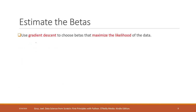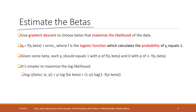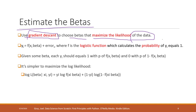How do we estimate the betas? It is a bit complicated, but just FYI: we can use gradient descent to choose the betas that maximize the likelihood of the data. We introduced gradient descent in previous weeks. We will not go into full details here, but gradient descent is the standard approach used to estimate the parameters in logistic regression.